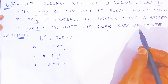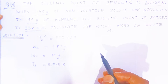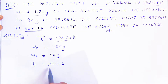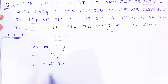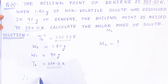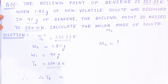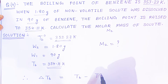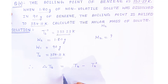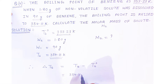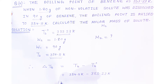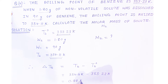Now, what will be the elevation in boiling point? This is the boiling point of benzene, that is the boiling point of the solvent. The elevation in boiling point, ΔTb, is nothing but the boiling point of solution minus the boiling point of solvent. So putting the values: 354.11 Kelvin minus 353.23 Kelvin gives us 0.88 Kelvin.